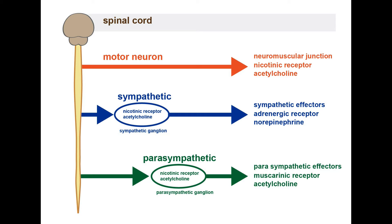In the sympathetic division of the autonomic nervous system, the pre-ganglionic neuron is long and myelinated, while the post-ganglionic neuron is unmyelinated. The pre-ganglionic neuron releases acetylcholine, and the post-ganglionic neuron has a nicotinic receptor called the N2 receptor which receives that signal.